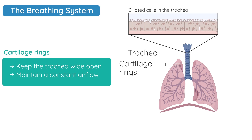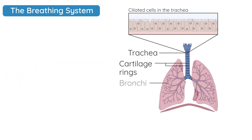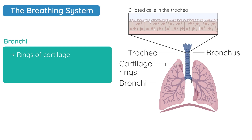At the base of the trachea the windpipe splits into two, and we call these the bronchi. Note that bronchi is the plural — the singular is bronchus — so in a human we have two bronchi. These two pipes attach to the trachea and eventually divide into smaller branches. Like the trachea, they have rings of cartilage, mucus, and cilia.